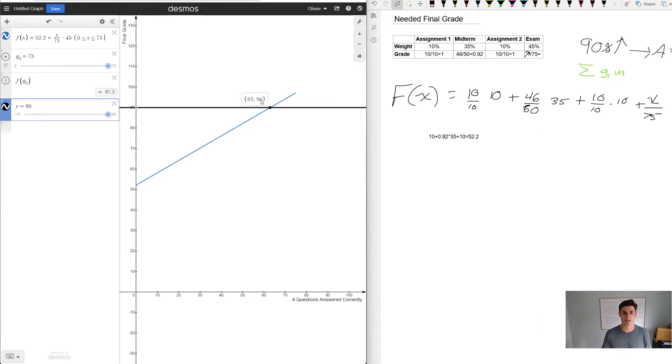Let's do it mathematically because we now have the equation. We have two equations: one that y equals 90 because that's what I need to have an A plus, and the second equation is that y equals 52.2 plus 45 over 75 times x.